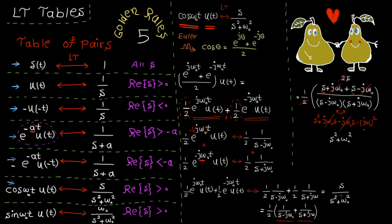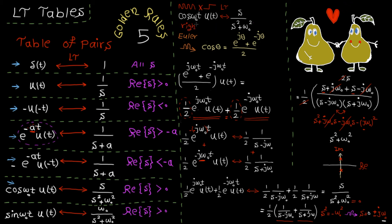Now let's talk about ROC for the cosine. The poles are where the denominator equals zero: bringing ω₀² to the other side and taking the square root gives poles at s = ±jω₀. The real part is zero — these are the poles and this is the boundary. The cosine is pure oscillation, and multiplying by u(t) zeroes out the negative side, giving a right-sided signal. So based on the golden rules the ROC is Re(s) > 0.